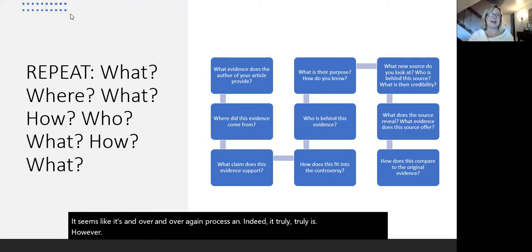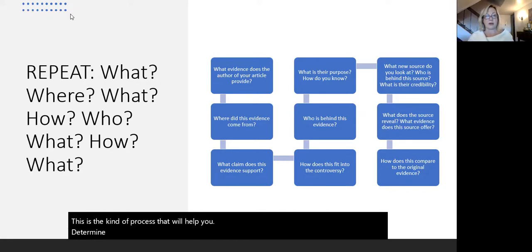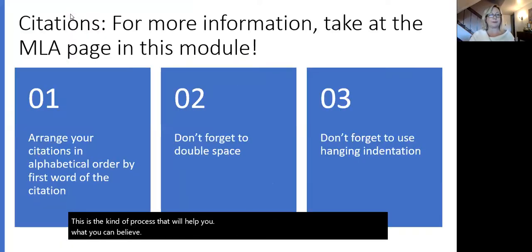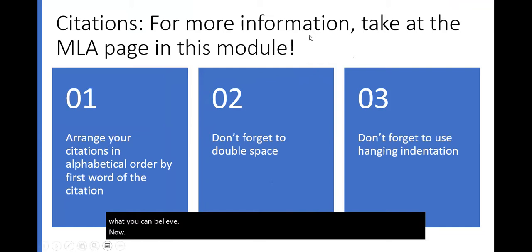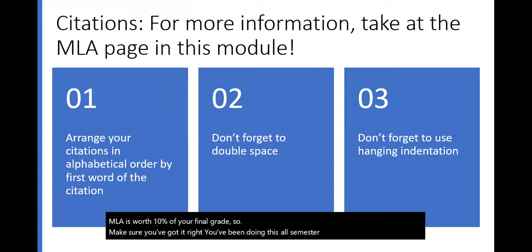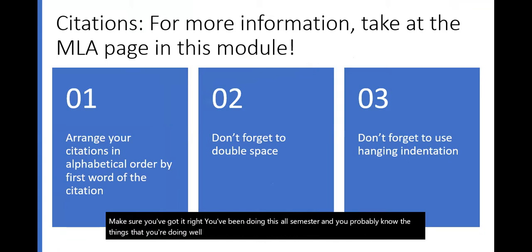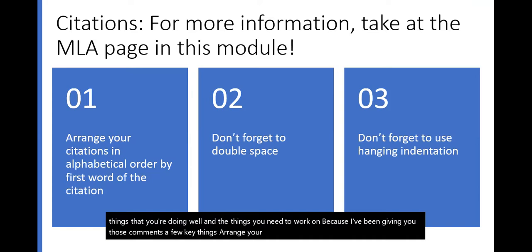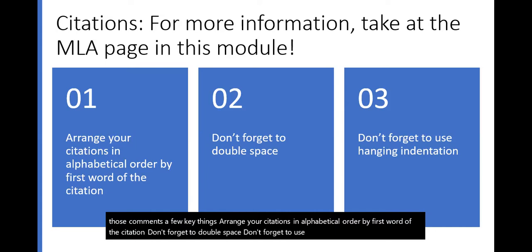This is the kind of process that will help you determine what you can believe. MLA is worth 10% of your final grade, so make sure you've got it right. Arrange your citations in alphabetical order by the first word of the citation, don't forget to double space, and don't forget to use hanging indentation. There is more information on an MLA page in the week 15 module.